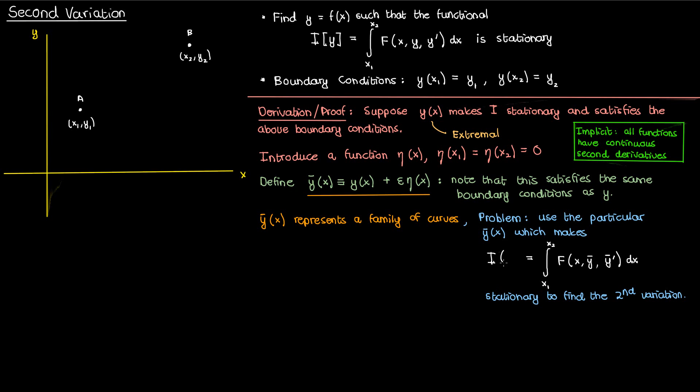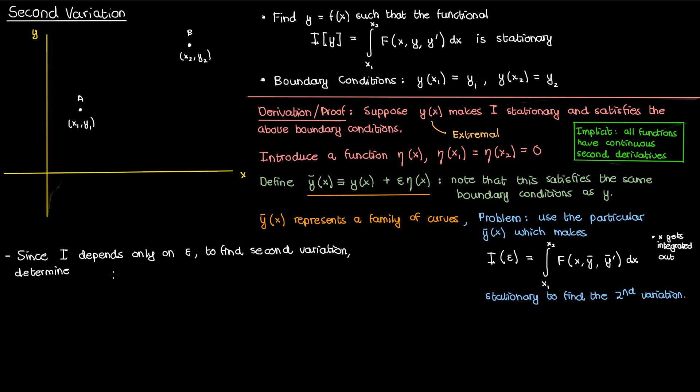Notice that this quantity i depends only on the parameter ε, because the x gets integrated out from the definite integral. The y-bar and y-bar-prime have x inside their expressions, so once you integrate and apply your limits, the only remaining variable is the ε found in y-bar and y-bar-prime. My main objective here is to find the second variation of i — the analog to the second derivative. Since i only depends on ε, finding the second variation is really just determining d²i/dε². Now if you remember my Euler-Lagrange video, I used di/dε and set that to zero just like in regular calculus, and now I'm extending that logic to find the second variation.